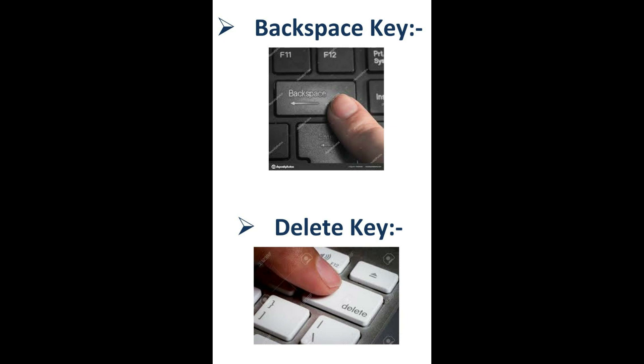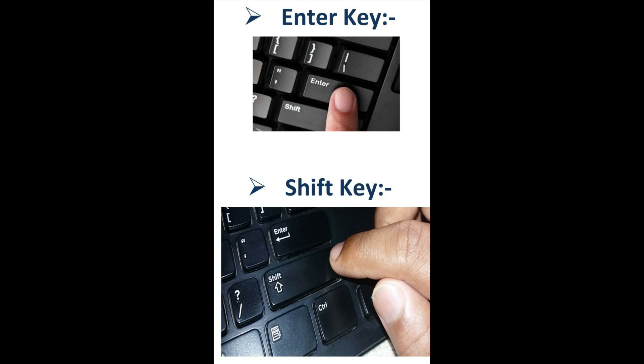Now let us talk about an important key — that is enter key. There are two enter keys on the keyboard, and these keys are used to bring the cursor to the next line. The next one is shift key. Shift keys are also two in number on the keyboard. When your caps lock key is off, you can hold the shift key to type capital letters.